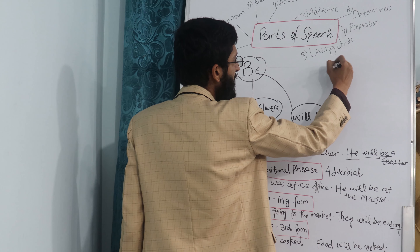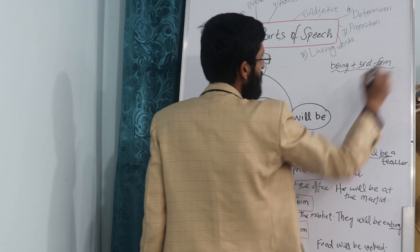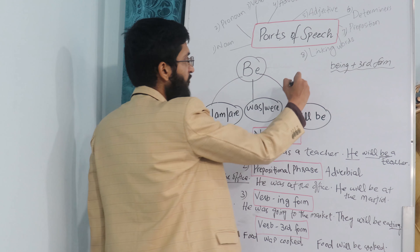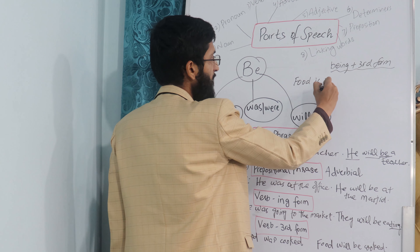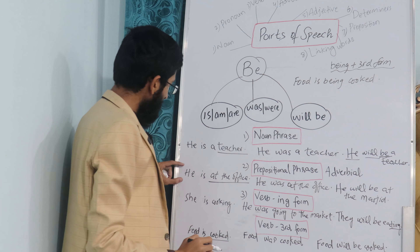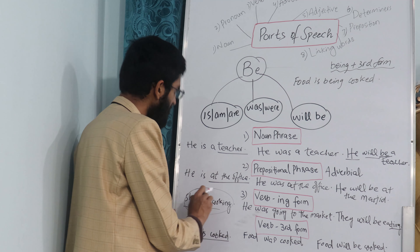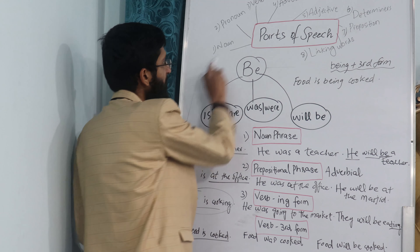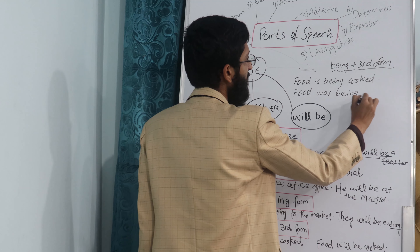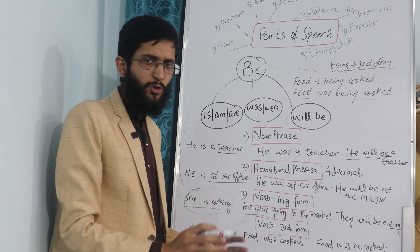The last structure is 'being' plus the third form. This truly means the action is going on — it is continuous but also in passive. For example: 'Food is being cooked' means somebody is cooking the food. 'The food is being cooked by her' is the passive of the active structure. For past: 'Food was being cooked' means somebody was cooking the food.